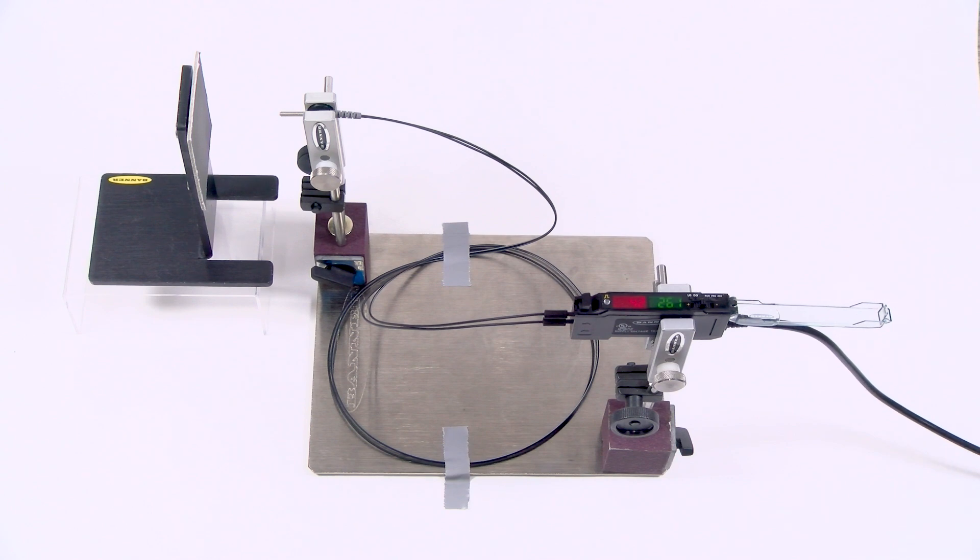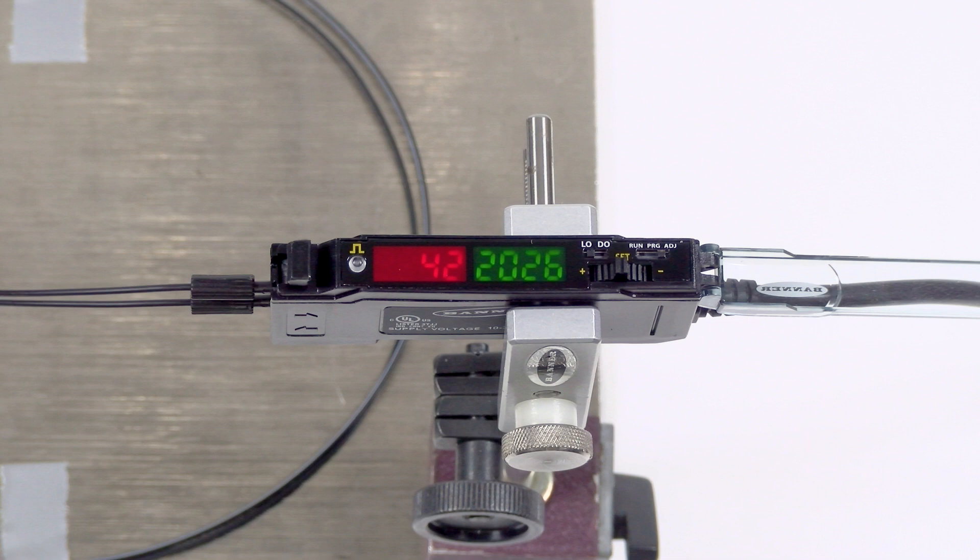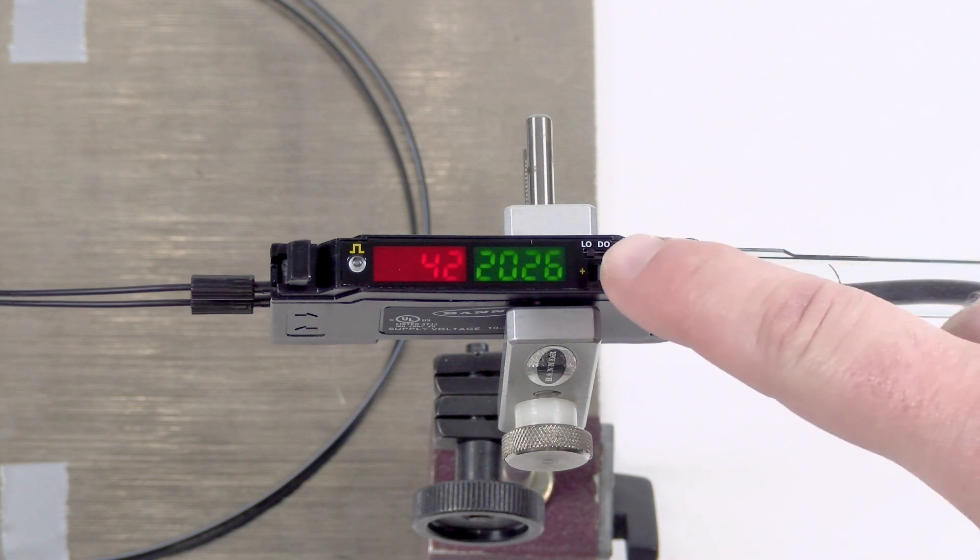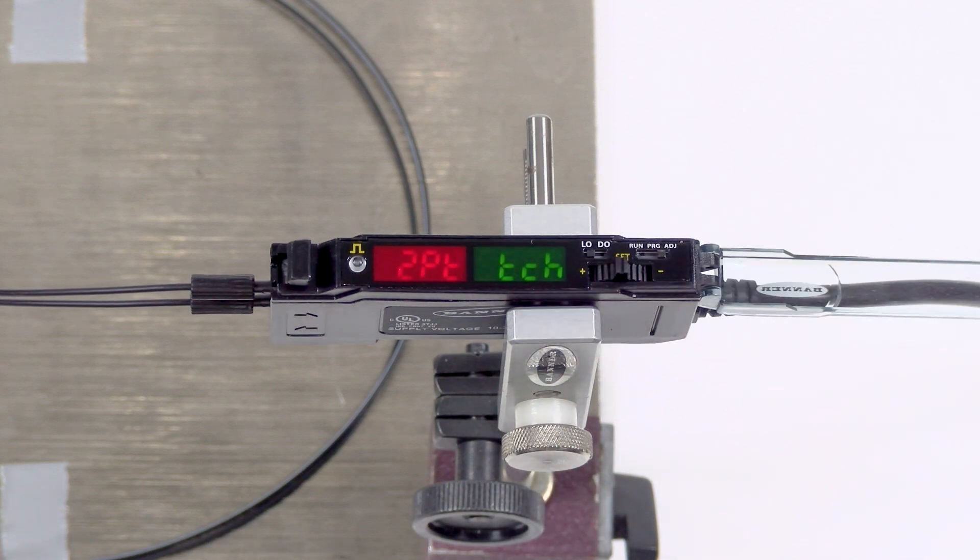Present the first target condition to the fiber optic sensor head. The display will show the current excess gain reading in red and the current switching threshold in green. Press down on the rocker button to teach the first condition. The display will momentarily show two-point teach followed by second.